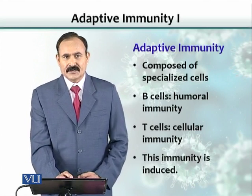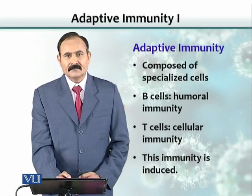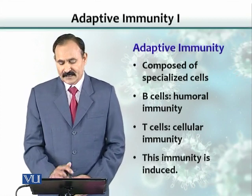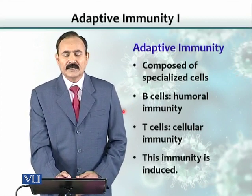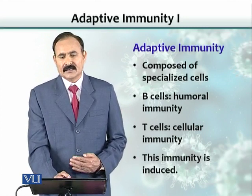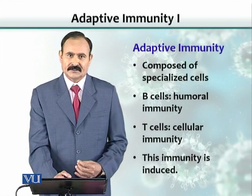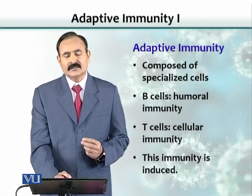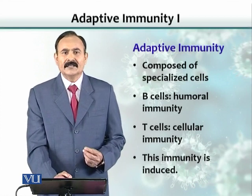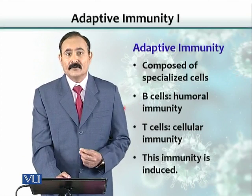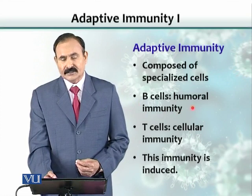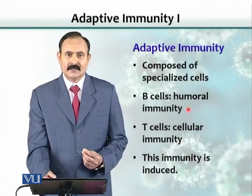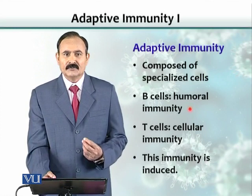Two cells in adaptive immunity are very important: B cells and T cells. B cells were discovered because these cells were originally observed in a structure in birds called the bursa — the bursa of Fabricius — a small structure located at the cloaca of birds. Later, these cells were also found to develop in the bone marrow. So 'B' is derived from bursa or bone marrow. The property of B cells is that they secrete antibodies, which in scientific terminology are also called humor — that is why we call this humoral immunity or the humoral immune response.